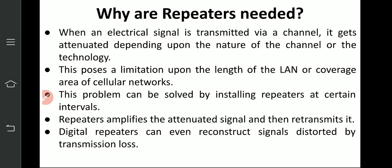The problem can be solved by installing repeaters at certain intervals. The repeaters amplify the attenuated signal and retransmit it, allowing the signal to travel further distances. Digital repeaters can even reconstruct signals distorted by transmission loss. Both analog and digital repeaters exist. Digital repeaters can reconstruct signals that have been destroyed by transmission loss and deliver them to the destination.